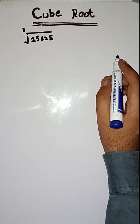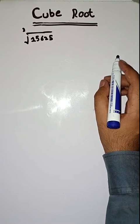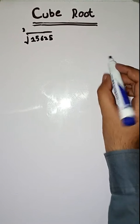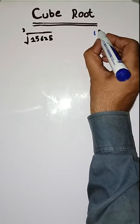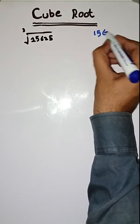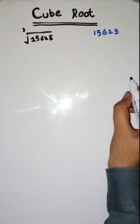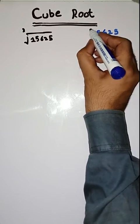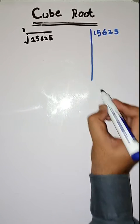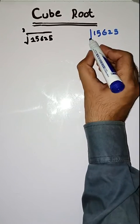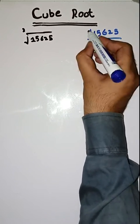Students, first we have to find the prime factors of 15625. So let's start. We start with 5.